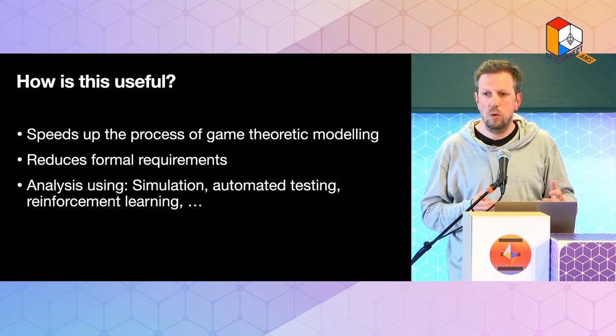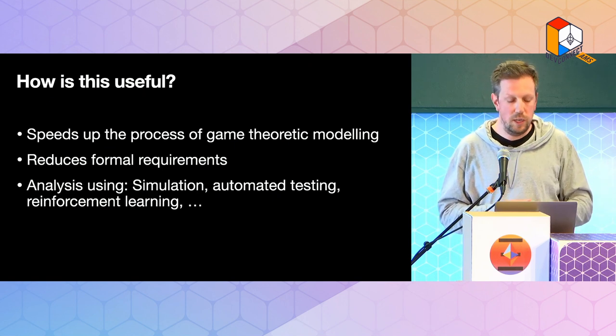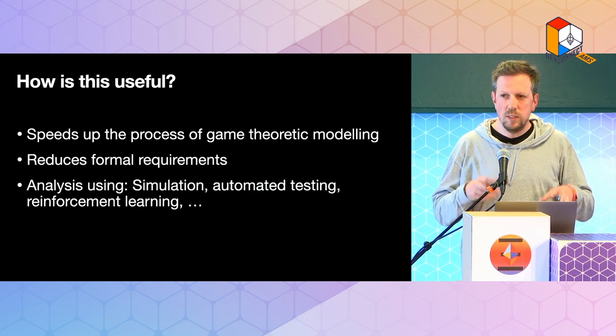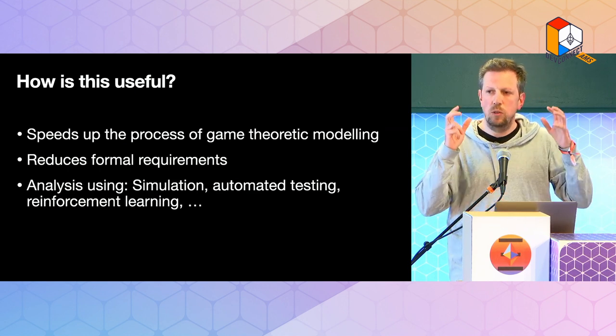Once you express an object as code, you can reuse it and make that piece of code input to other computations. We have mostly focused on an interactive proof assistant: you query a game, propose a strategy profile you think is an equilibrium, and the Haskell compiler tells you yes, or gives you a counterexample where one of the players has an incentive to deviate. More broadly, you can do simulation.